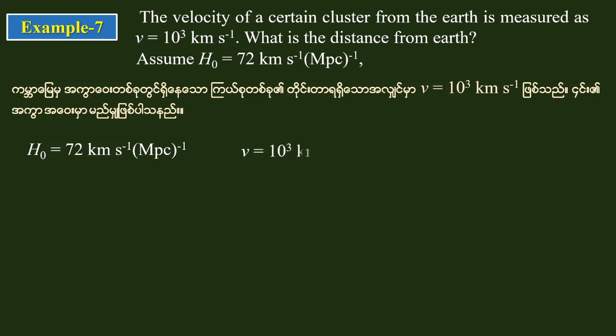Using H₀ = 72 km/s/Mpc, and v = 10³ km/s, we compute the distance. One megaparsec converts to 3.08 × 10¹⁹ km, giving us a result of approximately 3.018 × 10¹⁹ km for the distance.